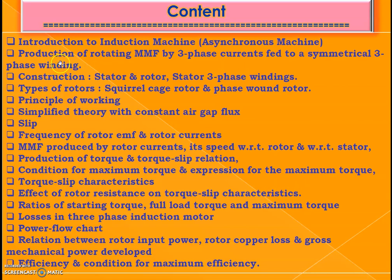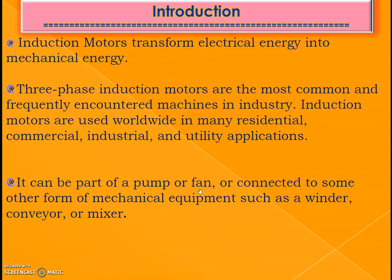In this video we are going to study many topics — I will make different videos for different topics. As an introduction, the induction motor is also known as an asynchronous machine. Induction machines have two types: induction motor and induction generator. The induction motor transforms electrical energy into mechanical energy, while the induction generator transforms mechanical energy into electrical energy. A main application of induction generators is in wind turbines, which is very popular nowadays.